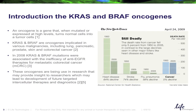KRAS and BRAF are oncogenes that have been implicated in various types of malignancies including lung, pancreatic, prostate, skin and colorectal cancer. It was in 2008 that KRAS and BRAF mutations were associated with the inefficacy of anti-EGFR therapies, specifically for metastatic colorectal cancer.